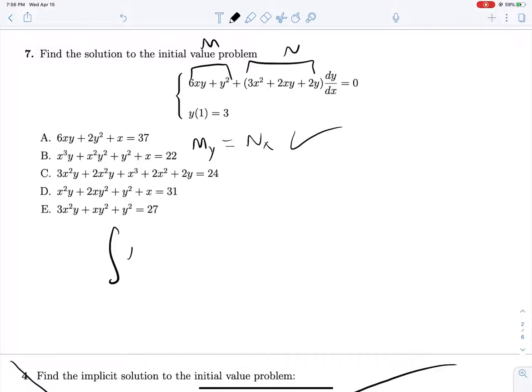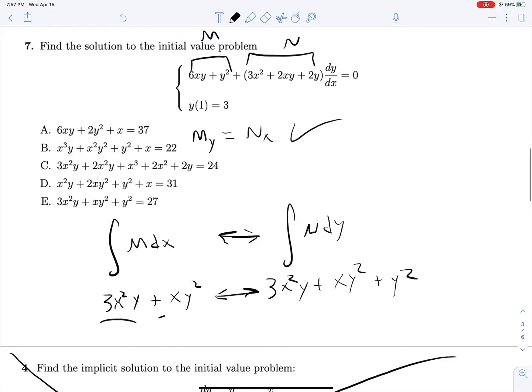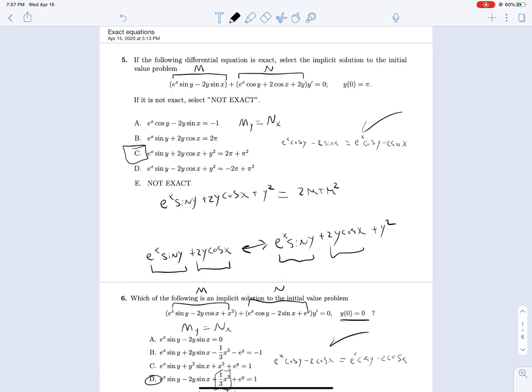We can now take the integral of M dx. That will be 3x squared y plus xy squared. And let's compare that against N dy, which gives us 3x squared y plus xy squared plus y cubed. And here are our overlapping terms. We can write our solution as 3x squared y plus xy squared plus the unique y cubed we had hanging out over here. This is equal to c. Solving for c, we're solving y at 1 equals 3. So we will get 9 here, another 9 here, and another 9 here. So c is 27. Hopefully this was a helpful little review for exact equations.